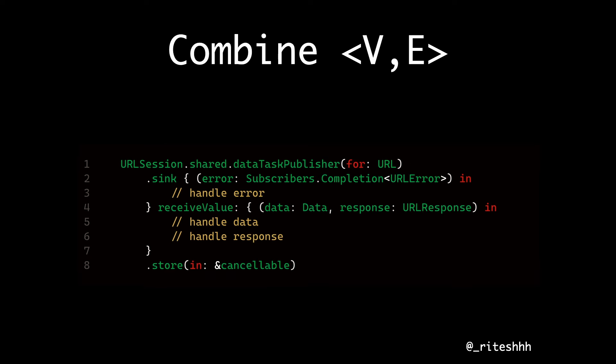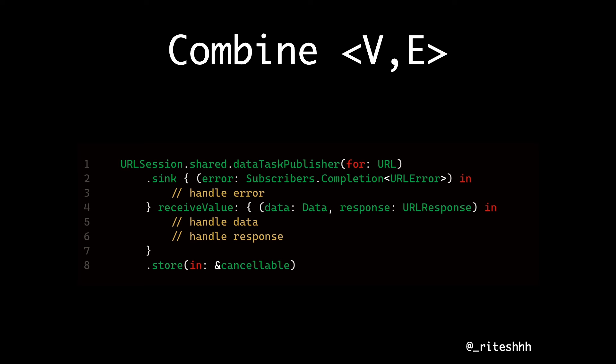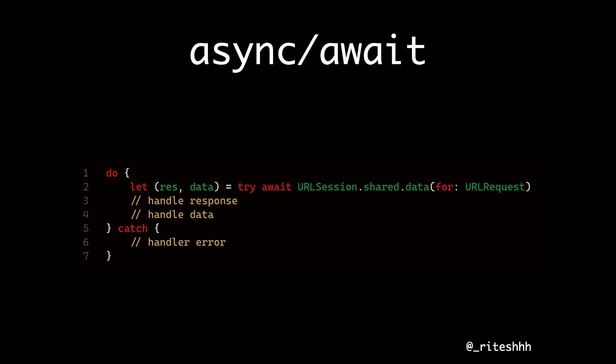Moving on to what async/await really solves. We've all seen a simple callback with three properties — data, response, and error all at one point. Then we have the Combine version: suddenly you can see a lot more code. We now need to know publishers, subscribers, completion — a lot of information is thrown in. But it simplifies things by breaking value into a separate callback and error into a separate callback, and you can cancel at the end. The async/await version looks like just one line of code — you read the data back and do a try-catch, which is a familiar Swift pattern.